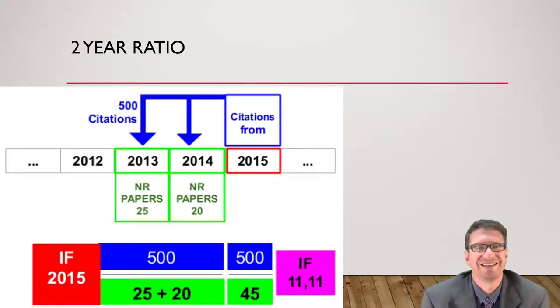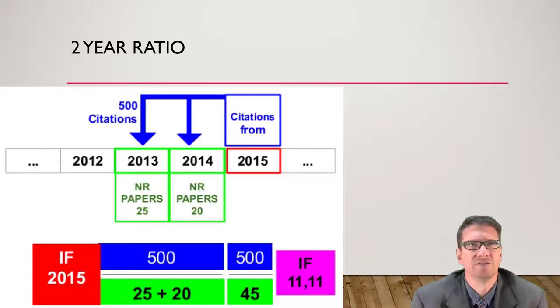The journal impact factor is calculated by looking at a window of two years. So in 2015 it looks at the number of papers in the journal and the number of citations and this one is divided. So 25 papers in 2013 and 20 papers in 2014 give you 45. With a total of 500 citations taken the year after in 2015 you then calculate the impact factor a bit over 11. That's how it's calculated.